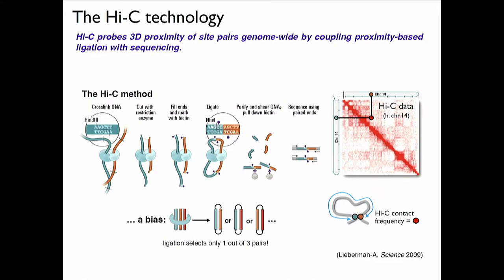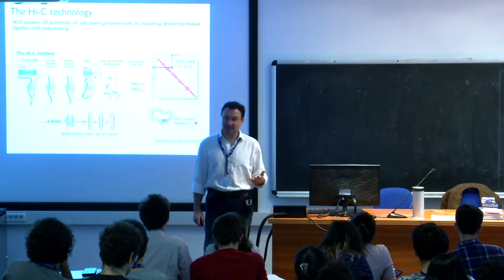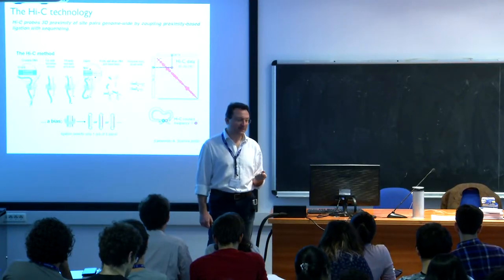This is called an Hi-C contact map. The entries tell you how many times those two fragments — the orange and the blue — have been sequenced together. That's a proxy of how frequently the two are together. You can do that genome-wide. In this type of experiment, the resolution is only given by the sequencing depth — how much you can sequence the DNA you have.